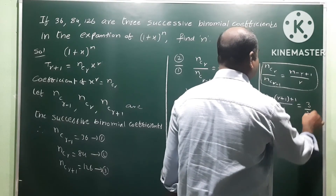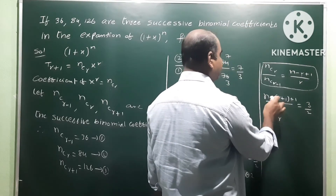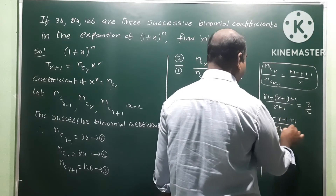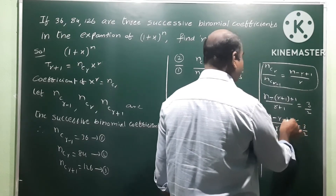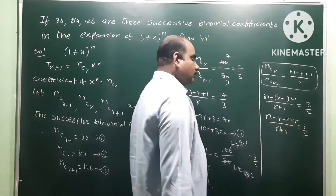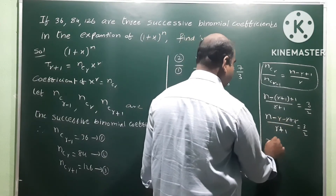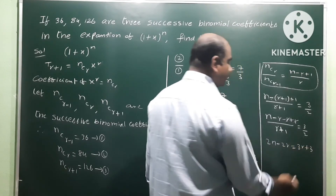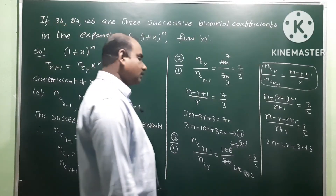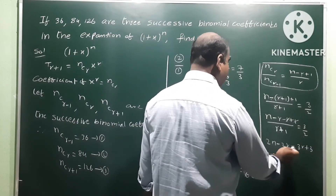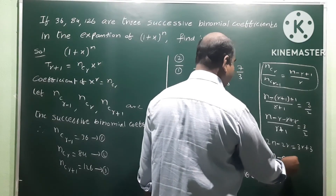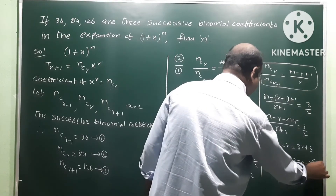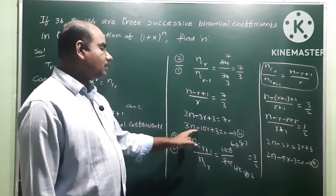Next, nC(r+1) / nCr = 126 / 84 = 3/2. The formula gives (n - r) / (r + 1) = 3/2. Cross multiplying: 2(n - r) = 3(r + 1), so 2n - 2r = 3r + 3, giving 2n - 5r - 3 = 0. This is equation 5.